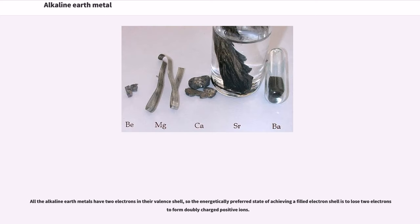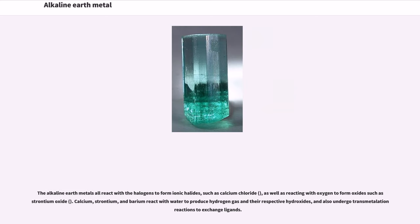All the alkaline earth metals have two electrons in their valence shell, so the energetically preferred state of achieving a filled electron shell is to lose two electrons to form doubly charged positive ions. The alkaline earth metals all react with the halogens to form ionic halides, such as calcium chloride, as well as reacting with oxygen to form oxides such as strontium oxide. Calcium, strontium, and barium react with water to produce hydrogen gas and their respective hydroxides, and also undergo transmetallation reactions to exchange ligands.